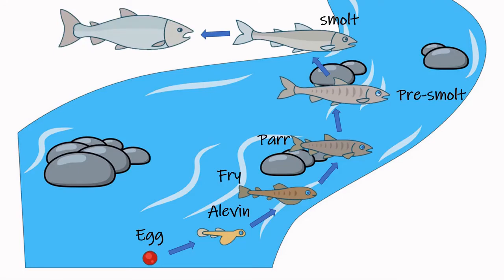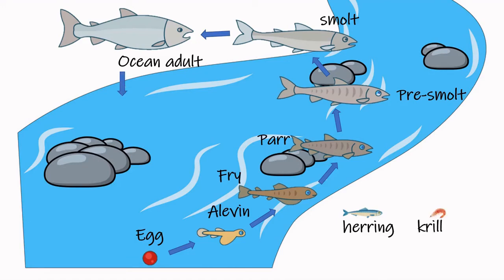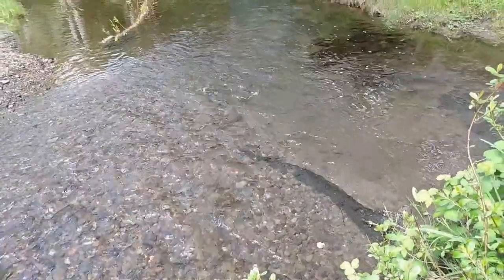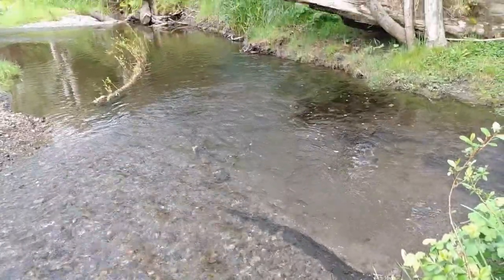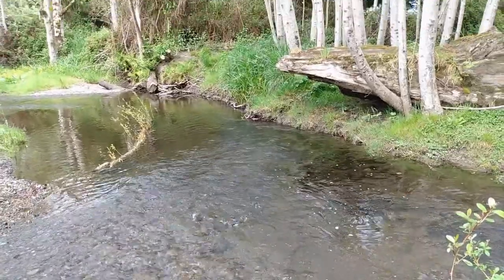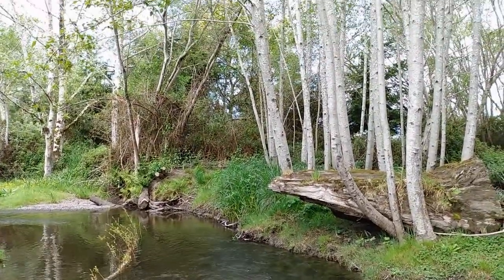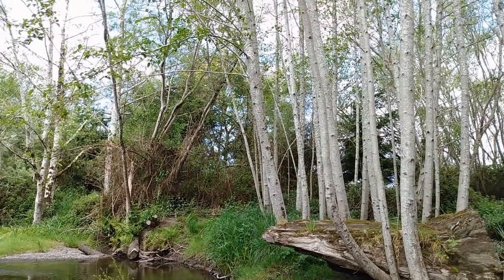In the ocean, the smolt grows into an adult salmon. It eats things like herring and krill. A couple years pass, and the salmon is ready to return to its home stream to spawn. When it enters the river, it gets bright spawning colors and a big hooked nose called a kype. Salmon ends its life cycle in the same place it was born, by digging a redd and laying its eggs. It dies shortly after spawning, and its body becomes food for nearly every living thing in the forest and stream.